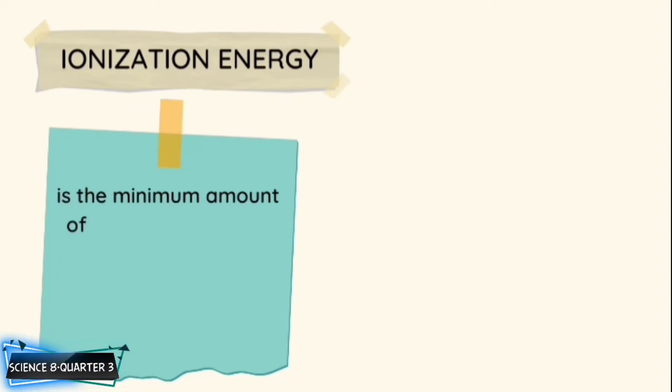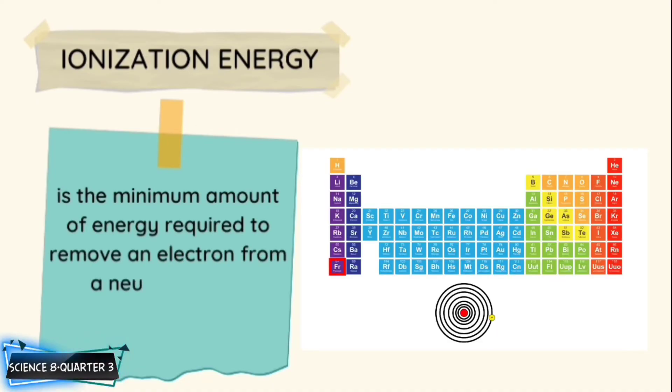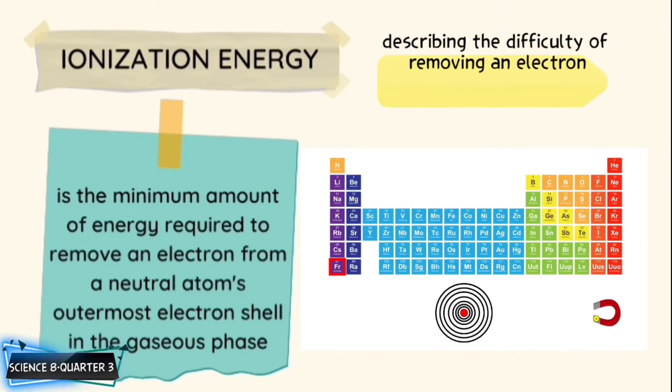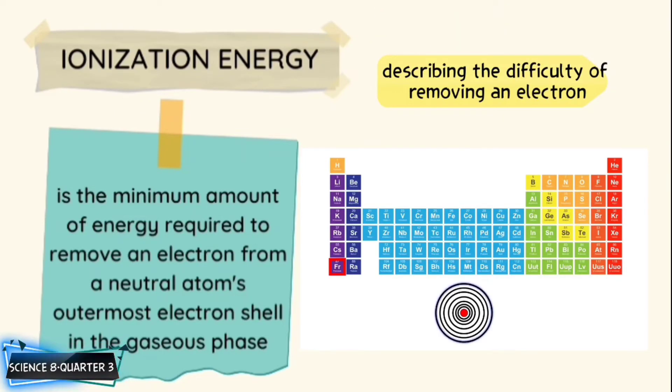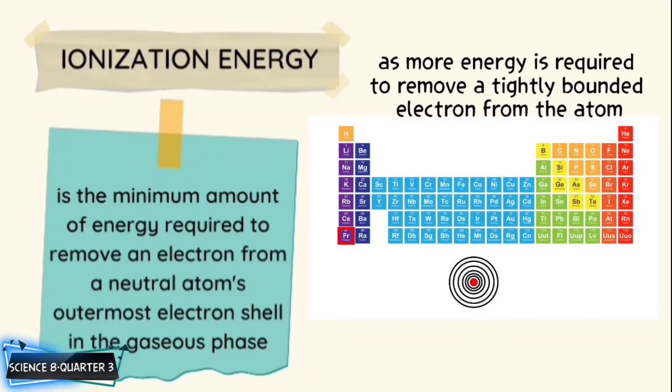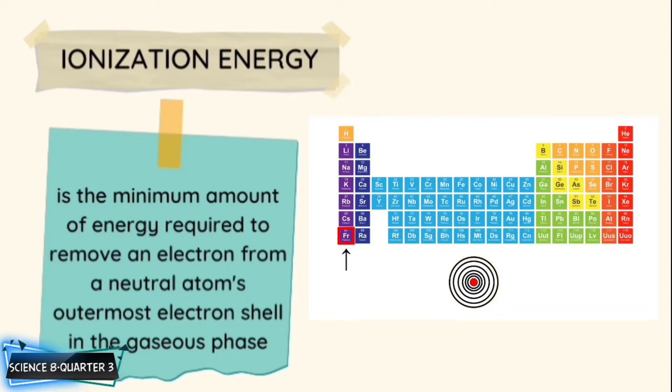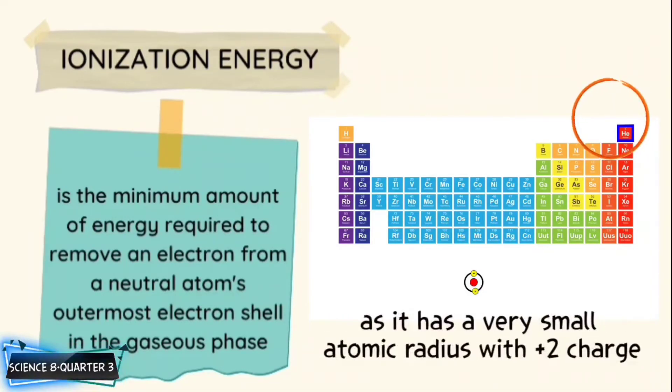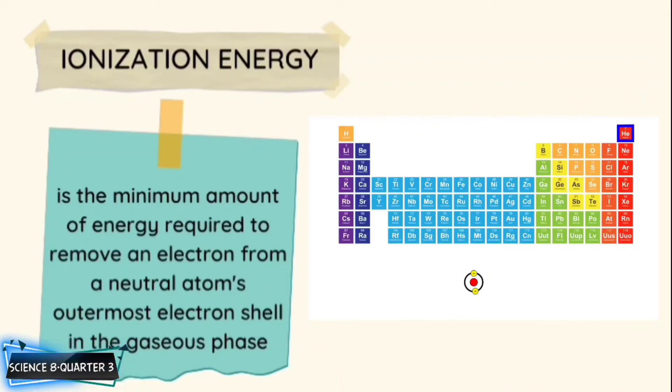Ionization energy: The minimum amount of energy required to remove an electron from a neutral atom's outermost electron shell in the gaseous state is called the ionization energy. This property describes the difficulty of removing an electron. The ionization energy increases further right along the period and higher up a group, as more energy is required to remove a tightly bonded electron from the atom. An example of high ionization energy is helium, as it has a very small atomic radius with positive 2 charge present in the nucleus. This allows for electrons to be retained as a result of these attractive forces.